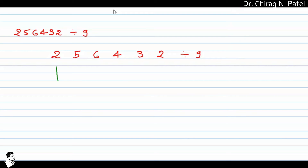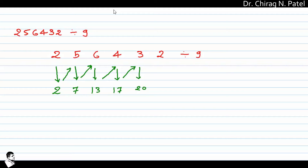Put the first number as it is, then sum it with the next: 2 plus 5 gives 7. Sum up to the next number: 7 plus 6 gives 13. Again, 13 plus 4 is 17, then 17 plus 3 is 20, and 20 plus 2 is 22. Write down that last summation value at the side.